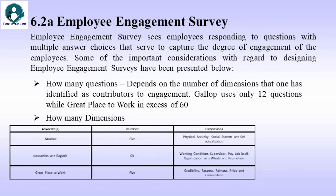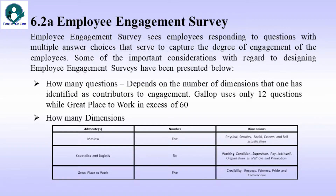How many dimensions? We can refer to the table given here. Maslow talked about five dimensions in his famous Hierarchy of Needs. These were physical, security, social, esteem, and self-actualization.